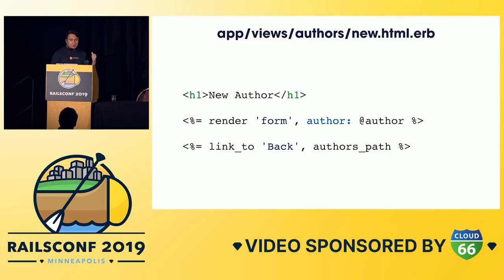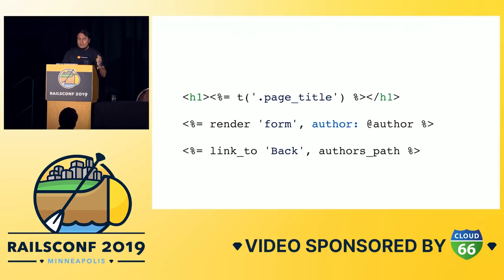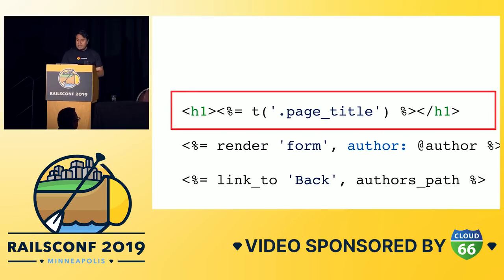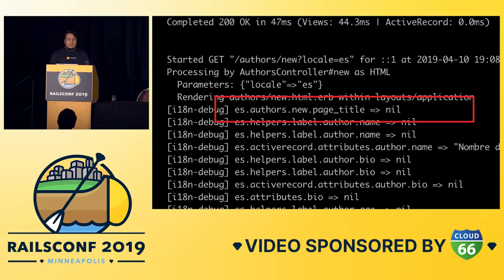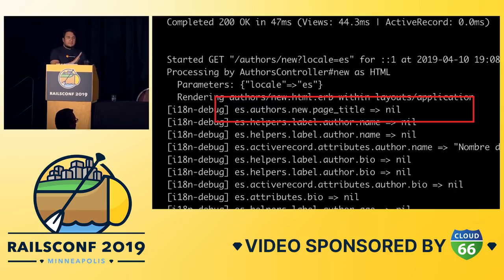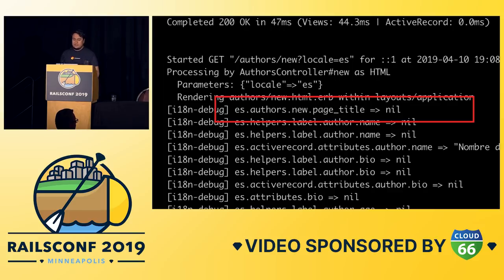Lazy lookup can also be used in views. You can just prepend a period — for example, '.page_title' — and it will automatically use 'authors.new.page_title' as the query scope. This is interesting because you can have partials used in different controllers or views, and depending on where it is, it comes up with a different query scope for the translation. So you can have the same view used for different controllers, and if the title or text changes, you can just change it using translations.